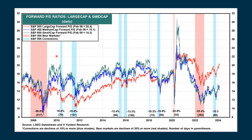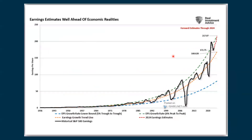For more context, this chart also marks different bear markets in red and corrections of 10% or more in blue, so you can kind of see the market history even though there's no separate S&P price chart on this particular chart.